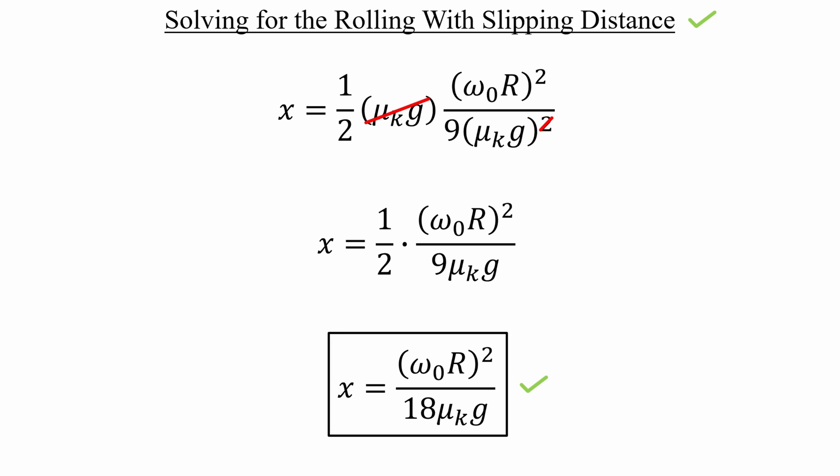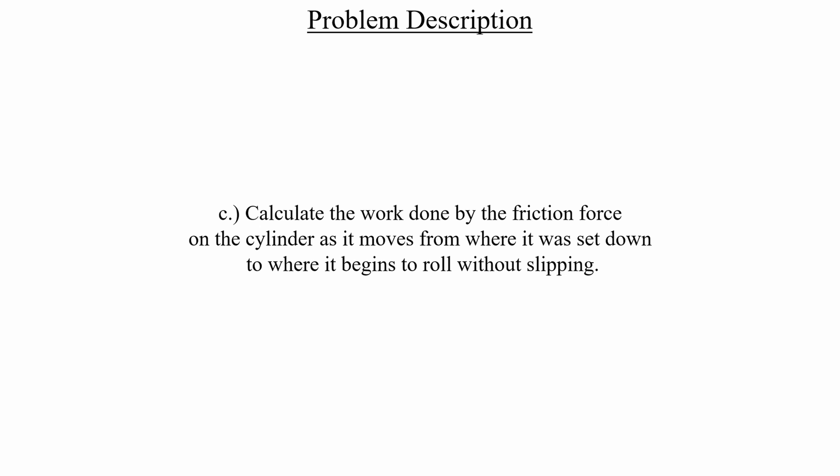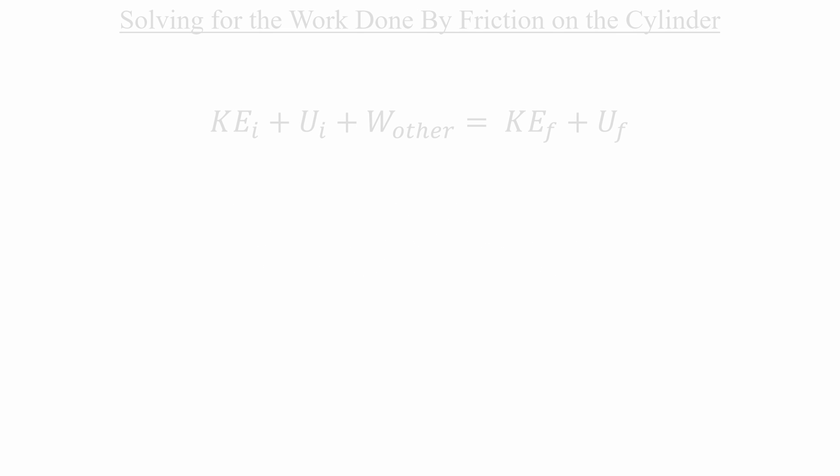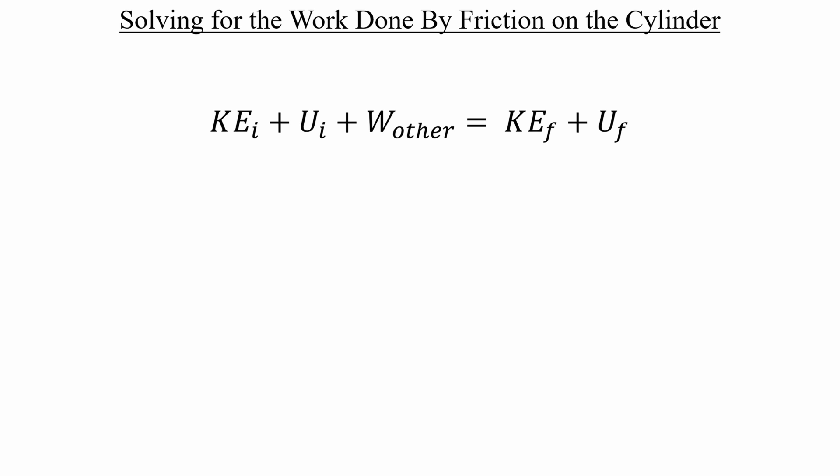There's one last thing for us to do here. We need to calculate the net amount of work that's done by the friction over the distance we just solved for. Let's figure that out the easy way, by using energy conservation. There's no change of height involved as this cylinder moves, so we're free to trash those potential energy terms right off the bat.